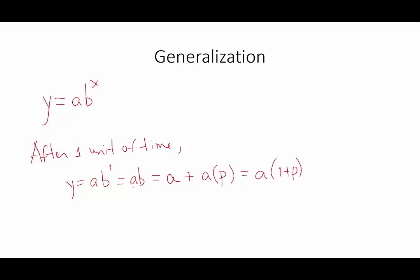And now, combined, looking at these two parts of this equation, we can see why, since a times b equals a times 1 plus p, that b is indeed 1 plus p.